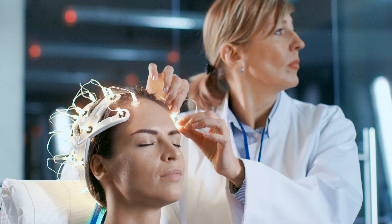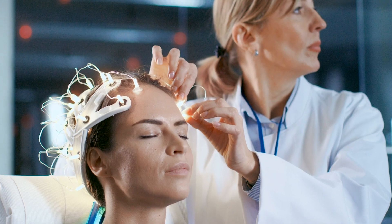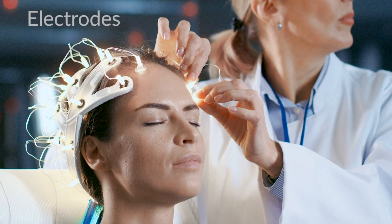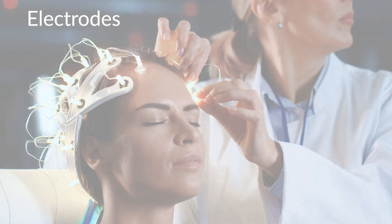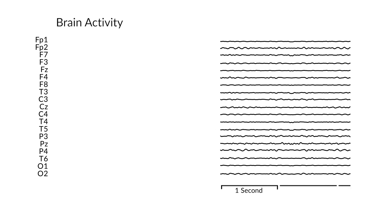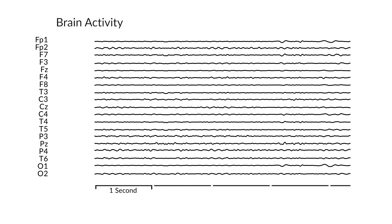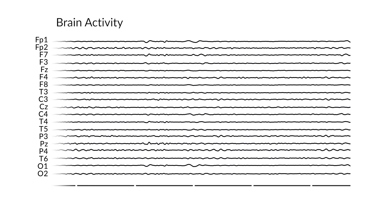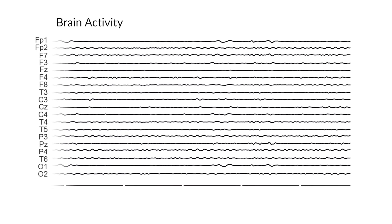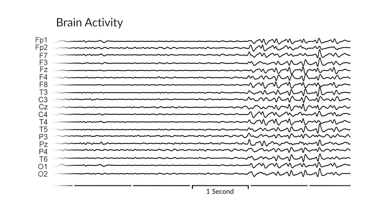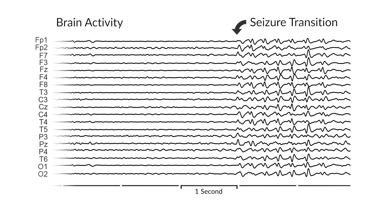This is done by placing small metal sensors called electrodes onto the scalp. These electrodes detect the naturally occurring electrical activity in the brain. When the brain transitions into a seizure, the electrodes detect it as a burst of activity.